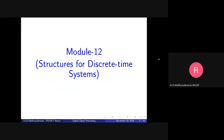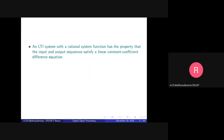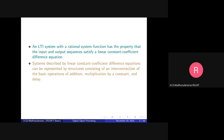Good morning. Today we are going to discuss structures for discrete time systems and how to implement discrete time systems. Every system with rational system function has the property that the input and output sequences satisfy a linear constant coefficient difference equation. Systems described by such equations can be represented by structures consisting of interconnections of addition, multiplication by a constant, and delay.